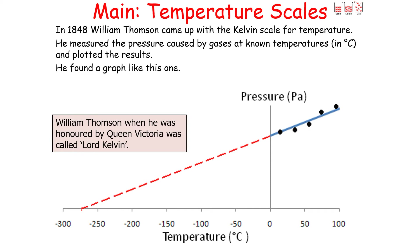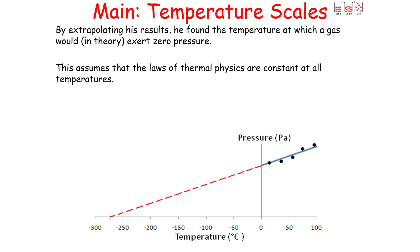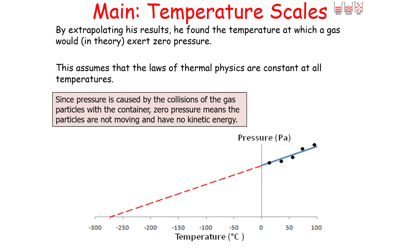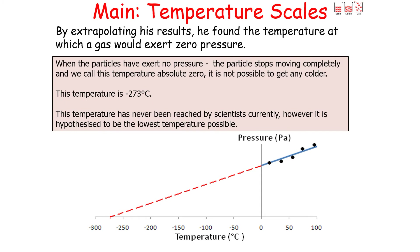Kelvin measured the pressure caused by gases at unknown temperatures and plotted the results. For every gas, he found the same type of graph. By extrapolating his results, he found a temperature at which a gas, in theory, would exert zero pressure — shown by the extrapolation of the line back to when it would exert 0 pressure. This extrapolation assumes the laws of physics are constant at all temperatures. Since pressure is caused by the collisions of gas particles with the container, zero pressure means the particles are not moving and have no kinetic energy — we call this temperature absolute zero.